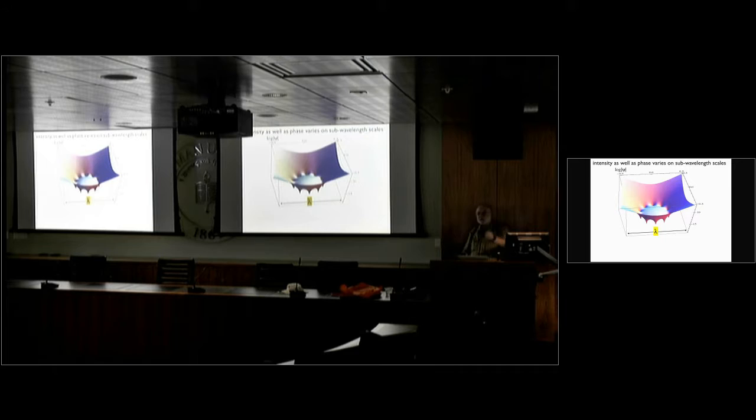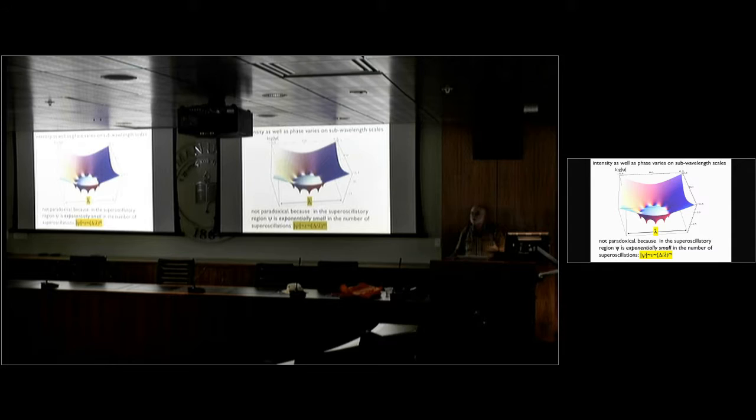Okay, so this is a class of superoscillations. But for this perturbed case, the intensity as well as the phase is varying on sub-wavelength scales. And here's a graph of the intensity. So lots of structures you can create with perfectly normal, much studied waves, if you look at them in this slightly different way. And as I again said, not paradoxical, because in the superoscillary region, the wave is exponentially small in the number of superoscillations. Delta being the spacing between them, divided by the wavelength to sum to this high power.